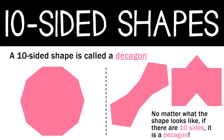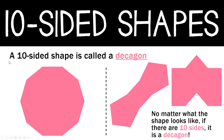Last but not least, we have a ten-sided shape. A ten-sided shape is called a decagon. Remember, just like with every other one, no matter what the shape looks like, if there are ten sides, it is a decagon. They all look different, but they all have ten sides so they're all going to be a decagon. Go ahead and pause the video and copy down: A ten-sided shape is called a decagon. When you're finished, unpause and we're going to practice identifying some different shapes.